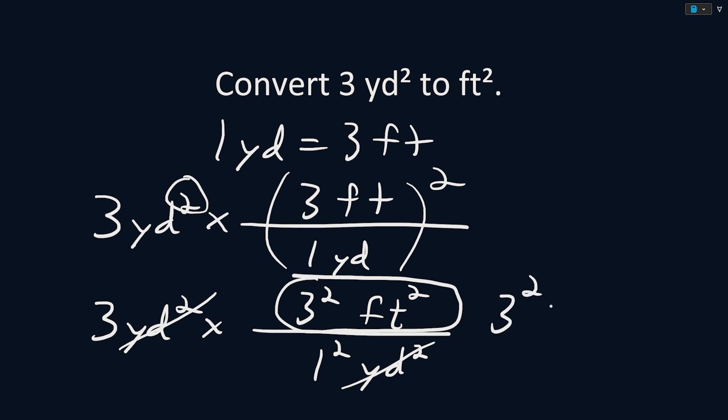Three squared is equivalent to three times three, and three times three equals nine. So to solve this, we do three times nine, which gives us that three yards squared is equivalent to 27 feet squared.